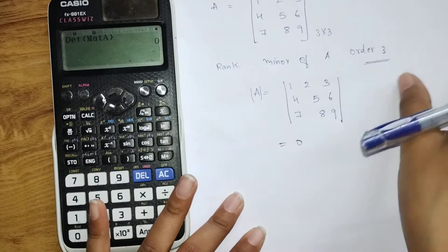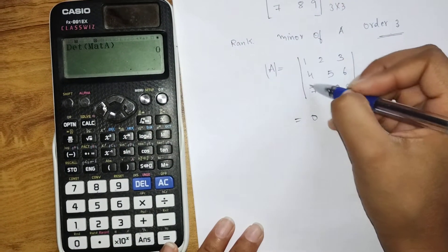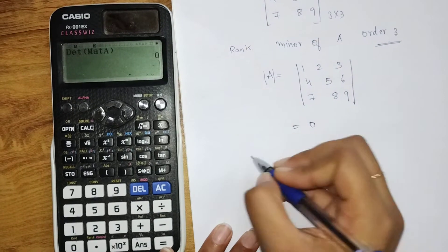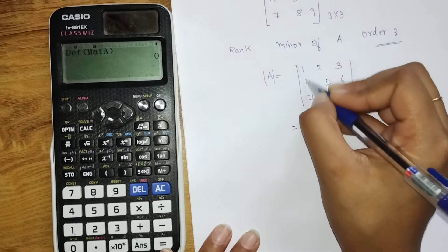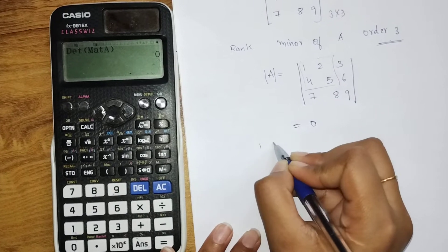Now we are basically using the minor. Minor as in, we are taking a part of it. So we are finding the determinant. I'm selecting this part. Let's see if we'll get a non-zero value.